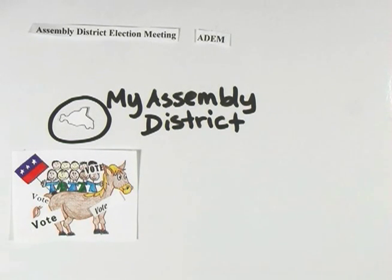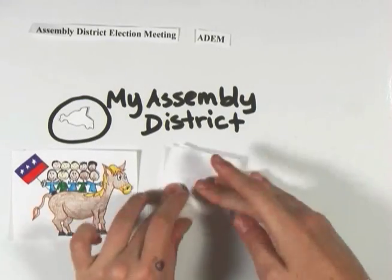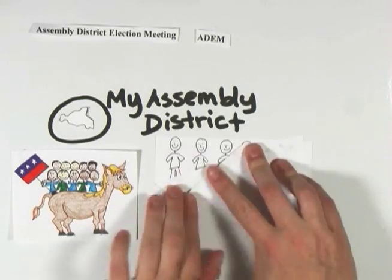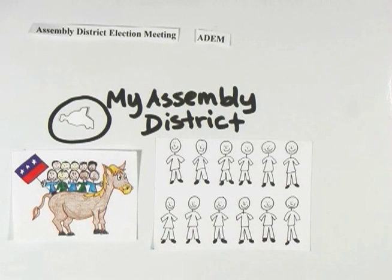Newly naturalized citizens and folks that turned 18 after the registration deadline can also participate if they register as Democrats at the meeting. At the ADEM, 12 delegates to the state party are elected to represent the assembly district. If at all possible, given the group of candidates, six of the delegates must be men and six of the delegates must be women.